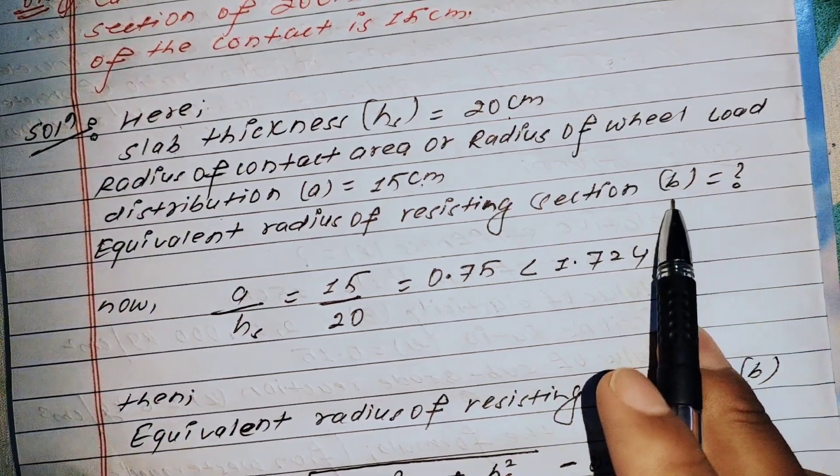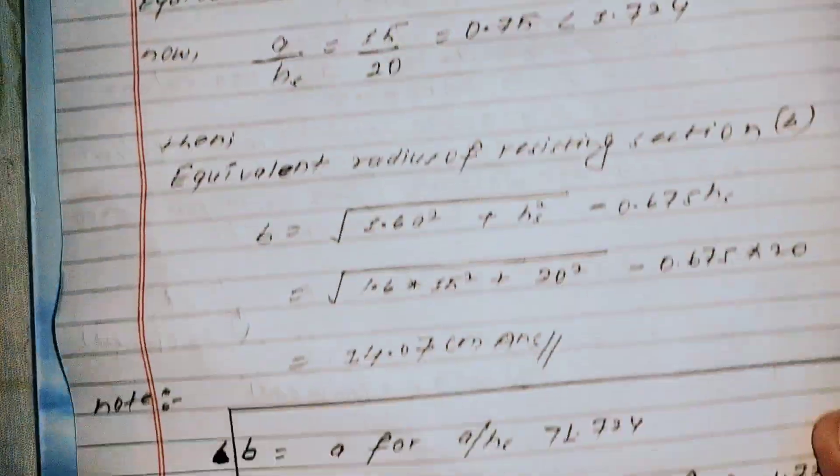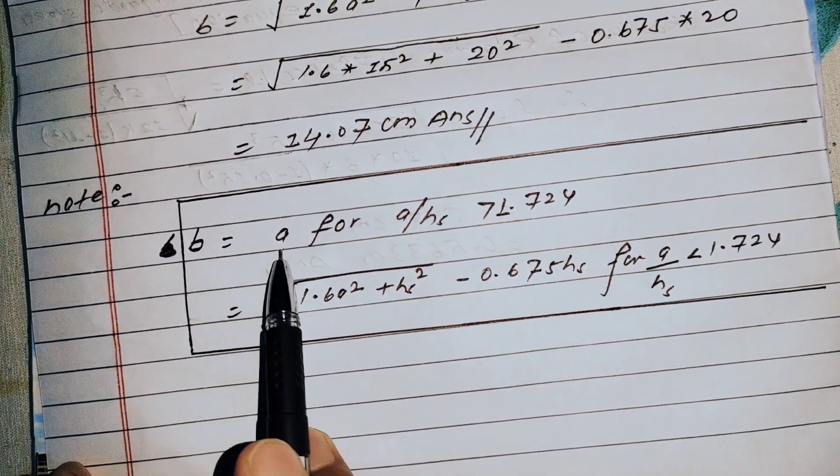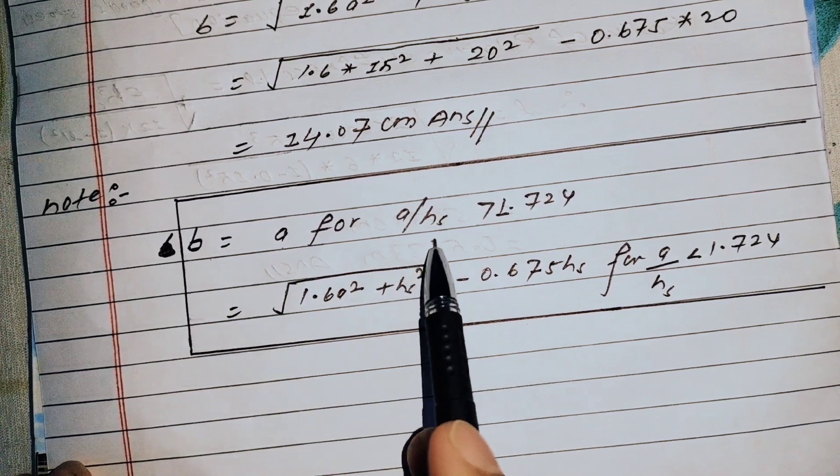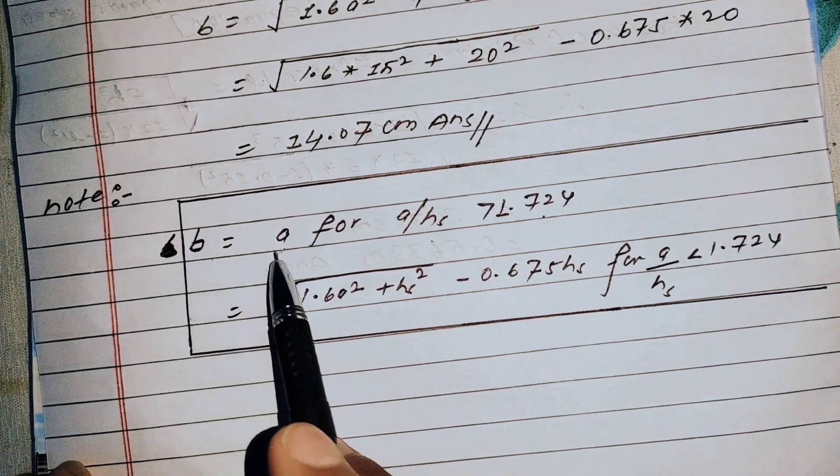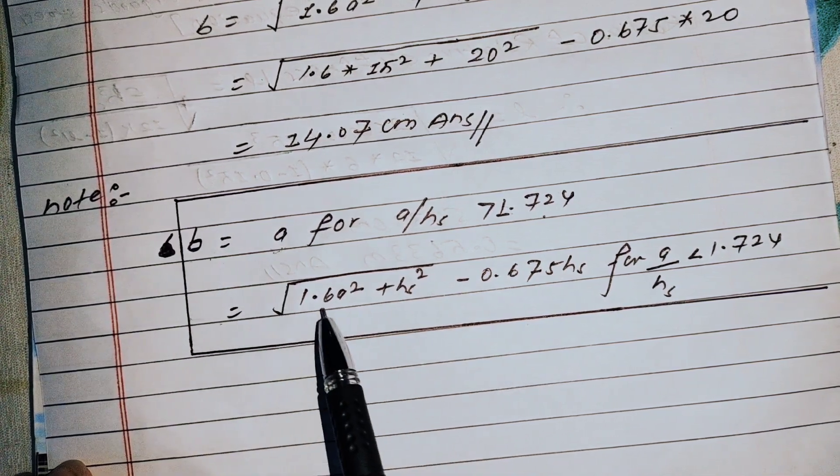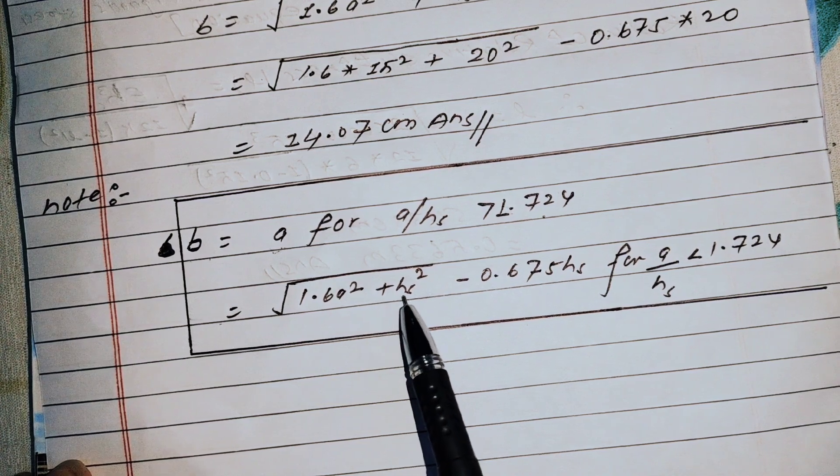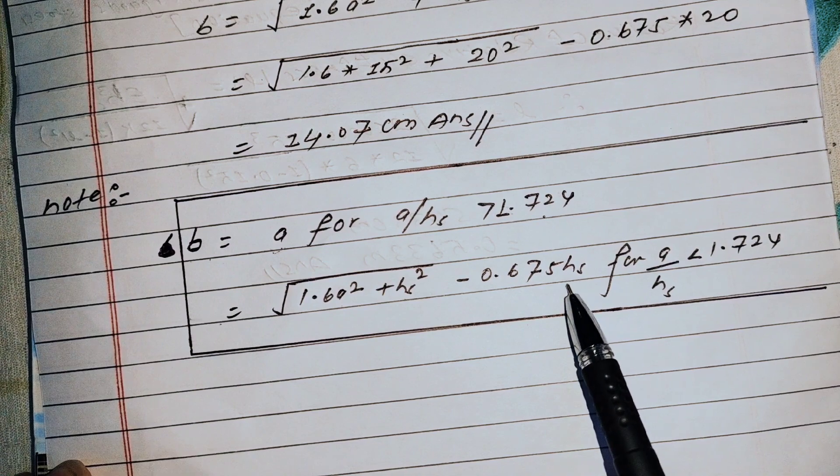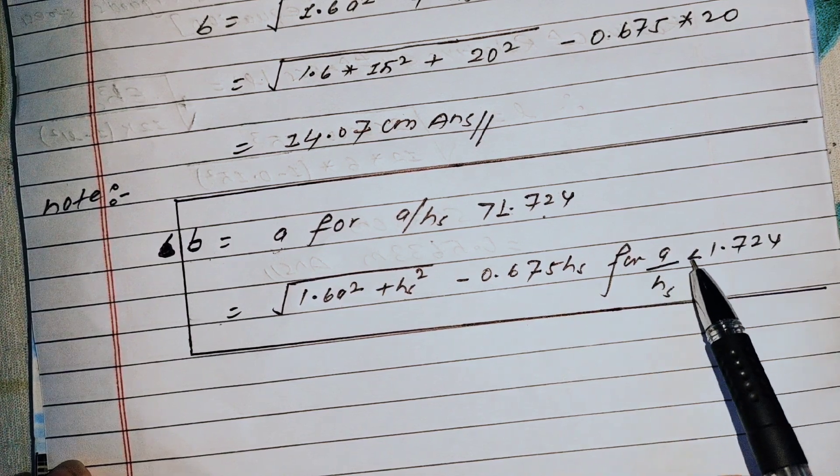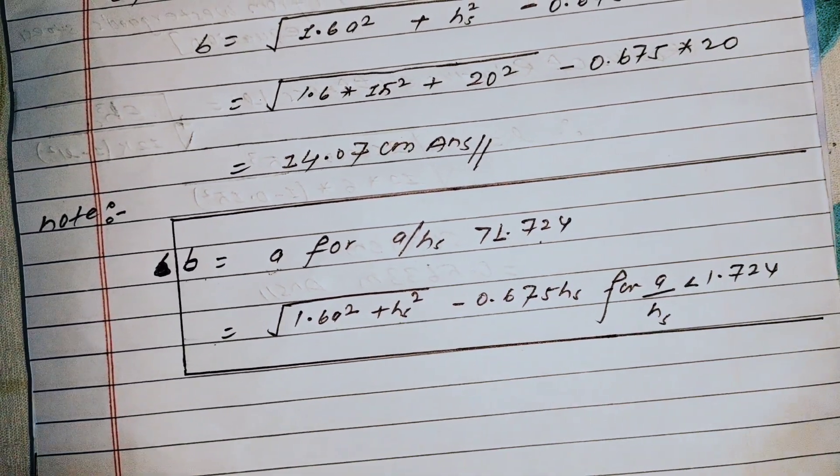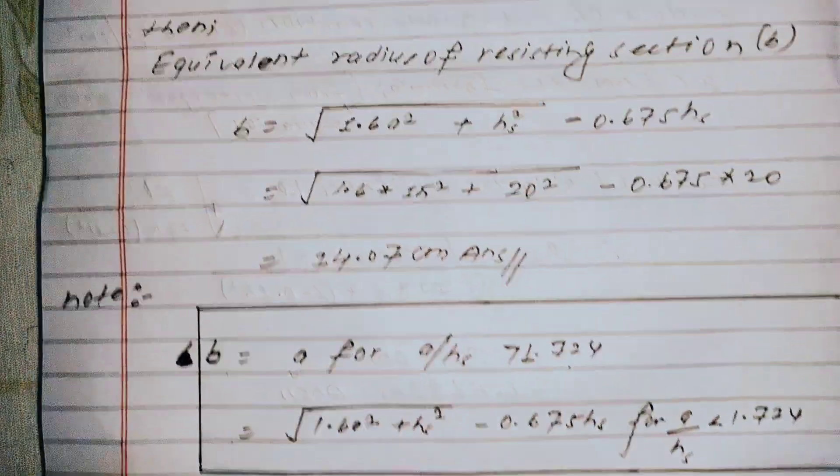First, I'll write the formula. The formula depends on the a/h ratio. If a/h ratio is greater than 1.724, use one formula. Otherwise, if less than 1.724, use: b = √[1.6a² + h²] - 0.675h, where a is contact radius, h is slab thickness.